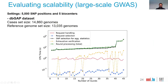We also evaluated DIPs on a larger-scale GWAS setting with 5,000 SNP positions from five biocenters, using the dbGAP dataset with approximately 28,000 genomes. As shown in the chart, DIPs has reasonable response times, and the most expensive step is the SNP selection algorithm, where we need to combine and collect genomes from different releases to compute the likelihood-ratio statistics.